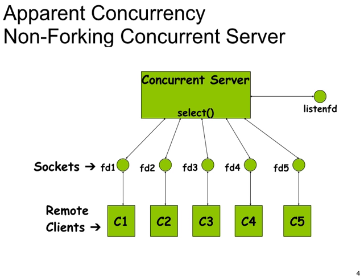Here is an example of apparent concurrency. There is a single server process using the select system call to monitor input and output on multiple file descriptors. Each file descriptor may be used to process connections with different remote clients. The select system call returns whenever any IO activity is ready on one of the clients, and at that point the server processes that client. However, while the server is processing one client, it is unable to process other clients. Such programs have a giant for loop which constantly polls the various IO descriptors using the select system call and processes their events one at a time.